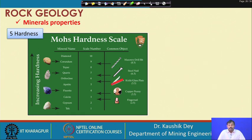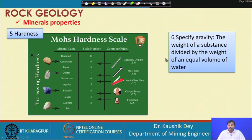Some common reference objects on the scale: a nail has a hardness of about 2.5 and a steel plate about 6.5. If we can identify a material's position on the hardness scale, we can determine what type of material it is. Hardness is therefore another very important parameter used for identifying minerals.